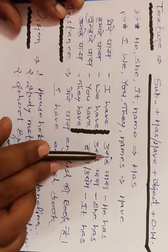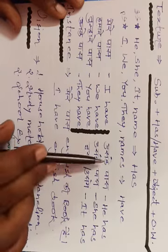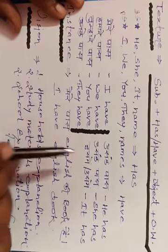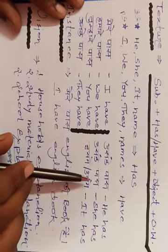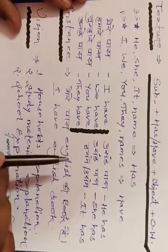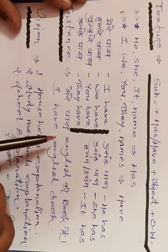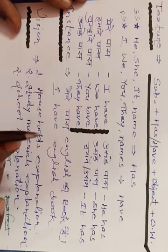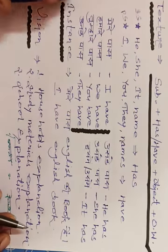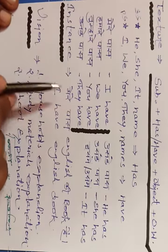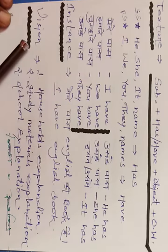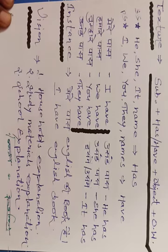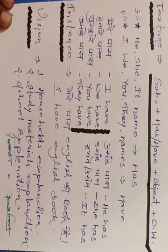Vahi par: Uske paas ek achha ghar hai — he has a beautiful house. He has one big gate in his house. He has one big hall. He has one television set in his hall. He has one sofa set in his hall. Tumhare paas hai ke sense mein: You have one beautiful house. You have one big hall in your house. You have two television sets in your house. You have one cooler. You have three fans. You have one computer system. You have one laptop. You have two cell phones. You have a bike.